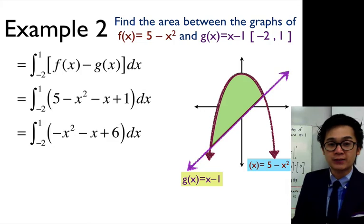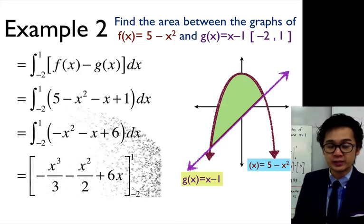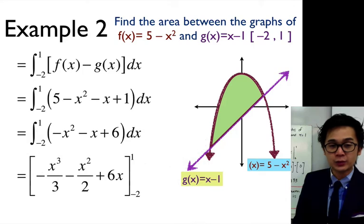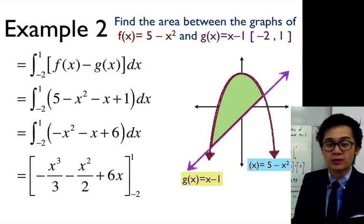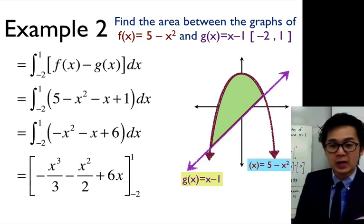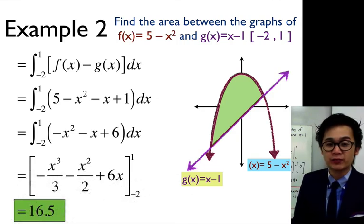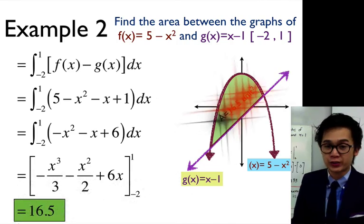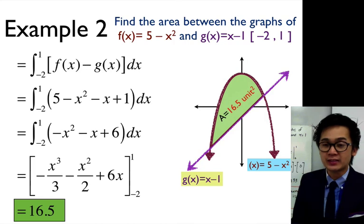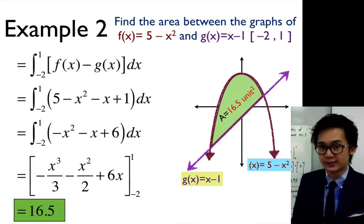By simplifying, we integrate -x² - x + 6 from -2 to 1, which gives us -x³/3 - x²/2 + 6x, evaluated from -2 to 1. By evaluating, we get 16.5 as our area, and that is the area between f(x) and g(x) for this particular example.